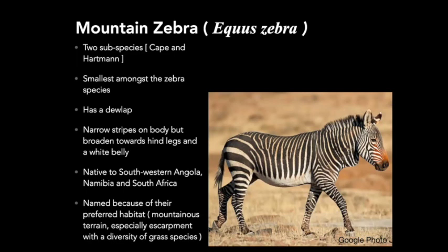If you look at the neck of the mountain zebra in the picture, you will find a flap of skin referred to as the dewlap. The mountain zebra is native to southwestern Angola, Namibia, and South Africa. It acquired its name because of its preferred habitat — it stays within highland areas and mountainous terrain, particularly escarpments, due to the diversity of grass species found there.